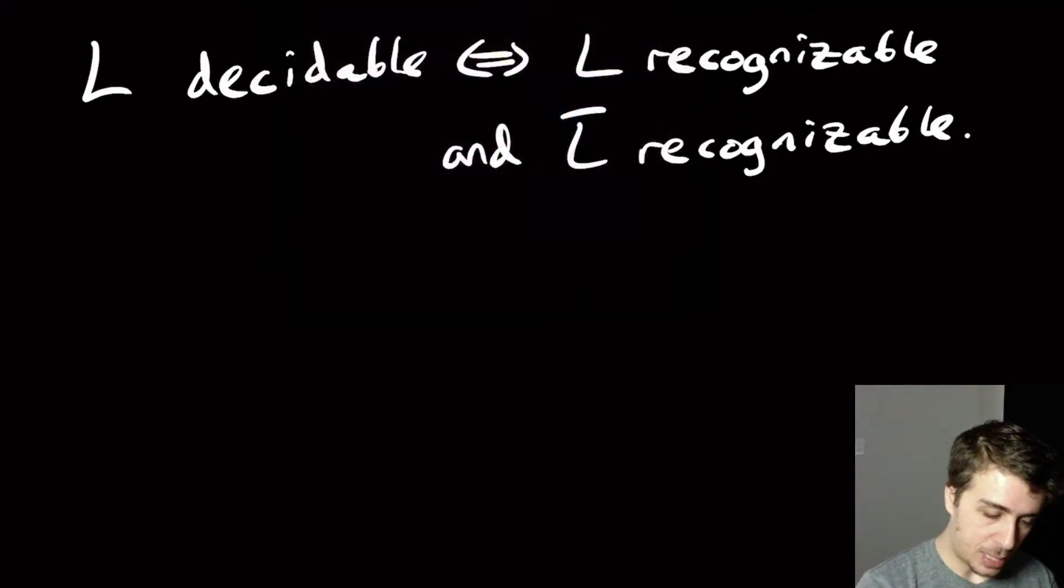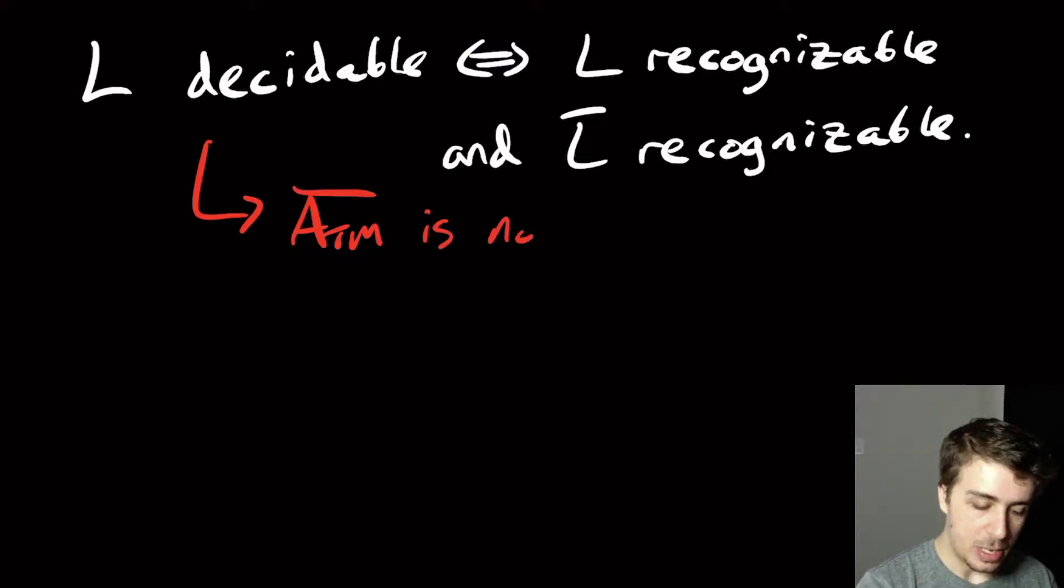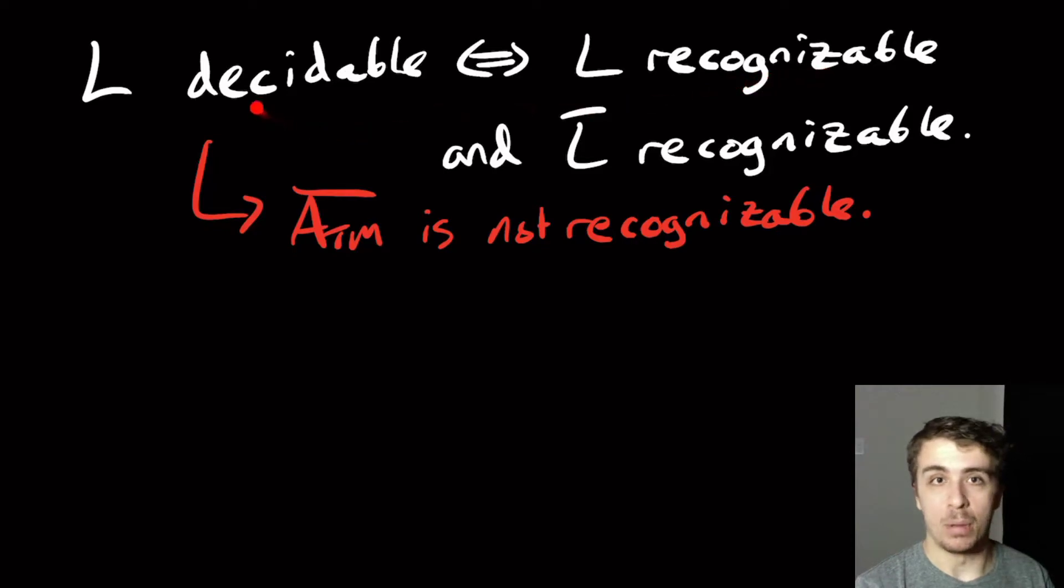And one thing that this implies is that ATM bar, the complement of it, is not recognizable. And why is that? Well, we prove that ATM is recognizable, but undecidable. So if ATM complement was recognizable, then this thing would imply that it were decidable, but we proved that it wasn't decidable. So that means that the complement of ATM must be not recognizable.